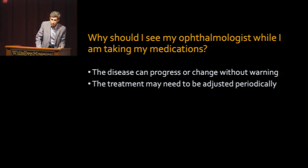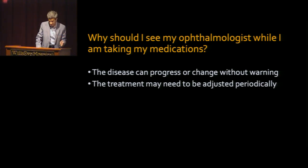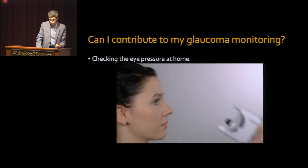Because glaucoma is a progressive disease and changes can happen without any warning, you need to be seen regularly by your physician. Sometimes pressure that has been controlled for years on medication may drift upward, and there are no symptoms related to that unless the pressure is very high — like in the 50s or 60s. At that point, your physician needs to adjust your treatment.